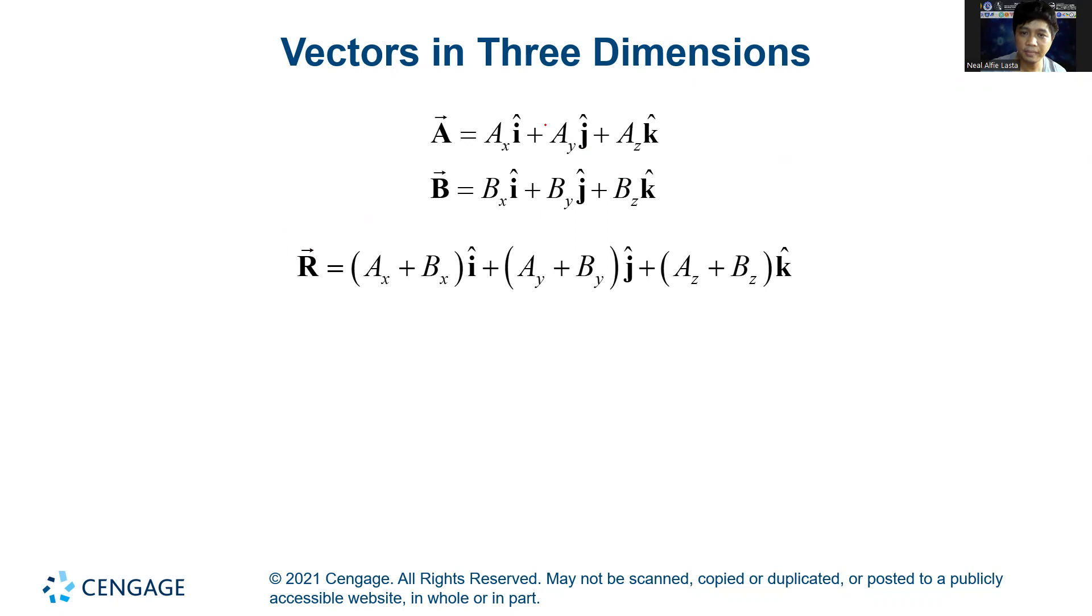So last meeting, I mentioned that we can represent vectors in what is known as the unit vector notation. So here you see that vector A is expressed in terms of unit vectors i hat, j hat, and now we add another unit vector called the k hat. So whatever component is multiplied to k hat, like in this case it is the component A sub z, then that component is along the z-axis. So in a 3D Cartesian plane, you have three axes: the x-axis, the y, and the z-axis.